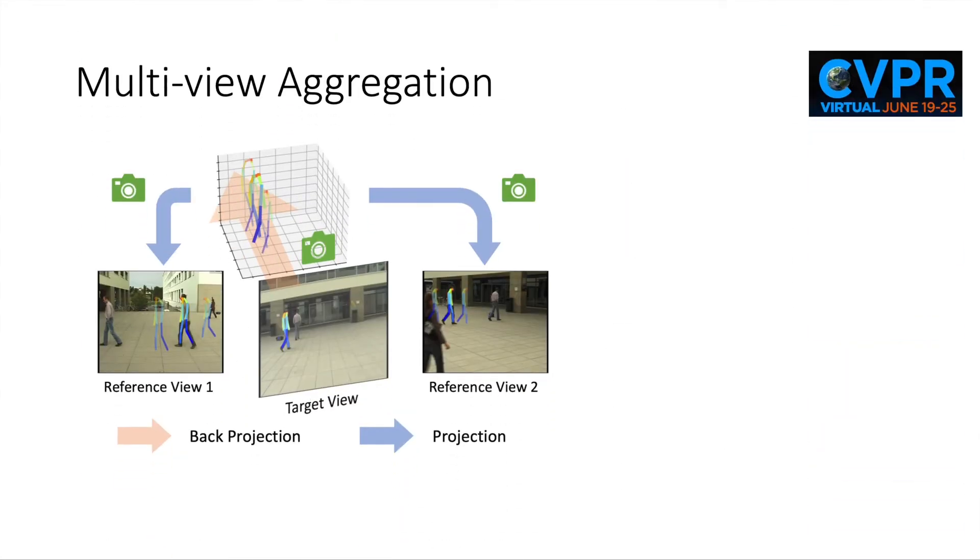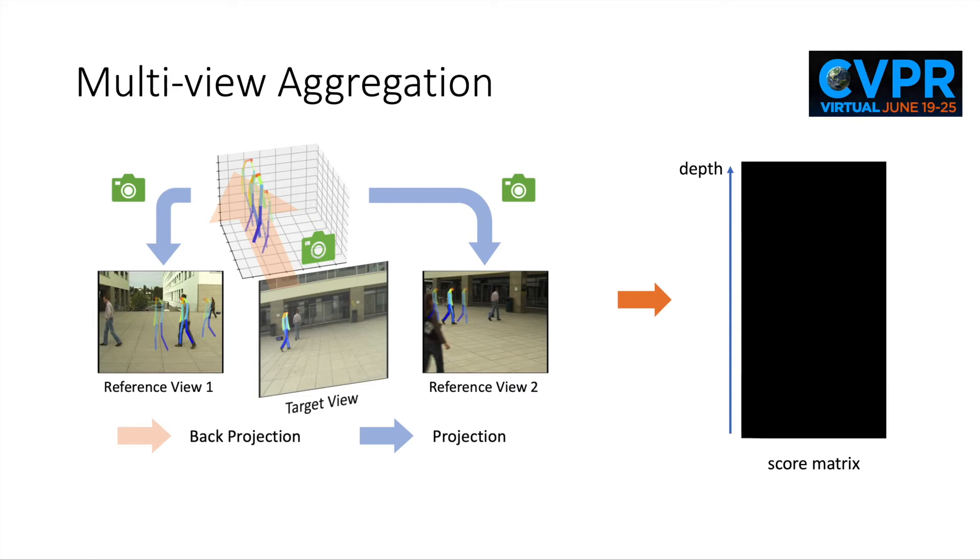We utilize the plane sweep algorithm to aggregate multiple view information for depth regression. We define a set of equally spaced virtual depth planes in a target camera view. Each candidate 2D pose in the target view is back projected to one of the virtual depth planes, and subsequently projected to each reference view. The resulting 2D pose projection is matched to the nearest 2D pose detection in each particular reference view, and a cross-view consistency score is computed accordingly based on the alignment of the two poses. We repeat this process to generate a score matrix over all depth planes.